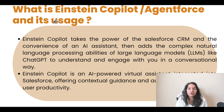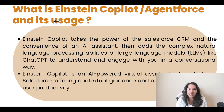So the first thing is: what is Einstein Copilot or AgentForce? Einstein Copilot takes the power of the Salesforce CRM and the convenience of an AI assistant, then adds the complex natural language processing abilities of large language models like ChatGPT to understand and engage with you in a conversational way. It is basically an AI assistant that sits on top of Salesforce CRM, so it has information about all your CRM data and records. It understands natural language and can communicate in a human form with you, performing tasks for you - it is a helping hand.